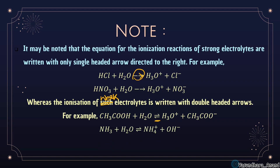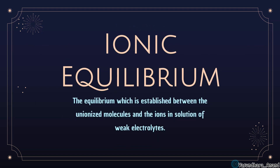For example, NH3 + H2O ⇌ NH4⁺ + OH⁻. Now, ionic equilibrium: the equilibrium established between unionized molecules and the ions in the solution of weak electrolytes — that is called ionic equilibrium.